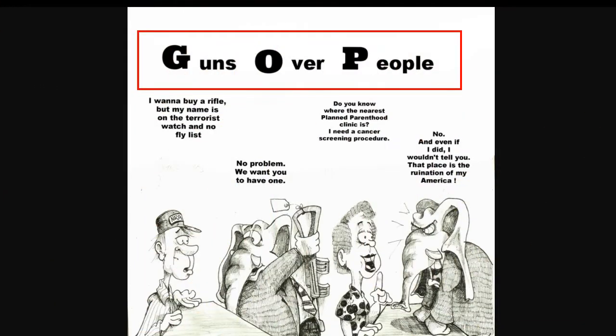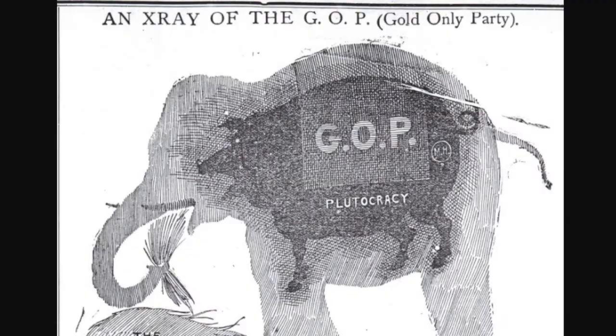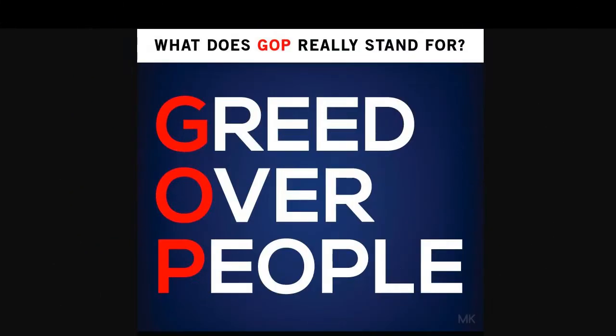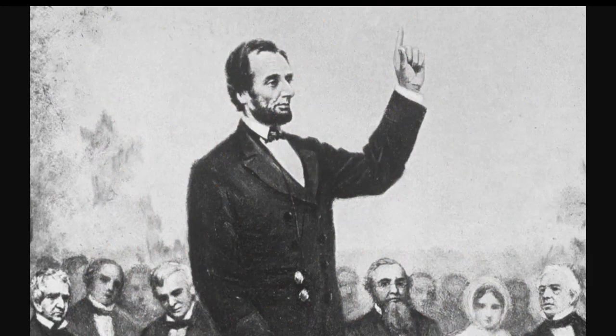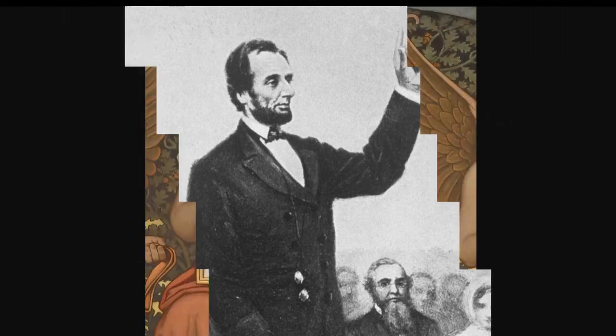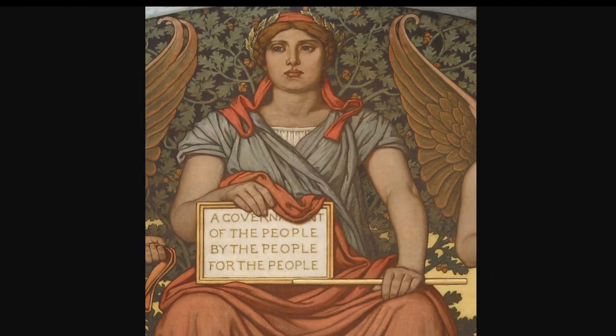Americans have come up with a host of incorrect answers as to what the initials stand for. A few mocking examples include "gold-only party" and "greed over people." A large faction also wrongly assumes it stands for "government of the people." This might be due to the last line of the Gettysburg Address, delivered by Abraham Lincoln in 1863, which advocated for a government by the people, for the people.